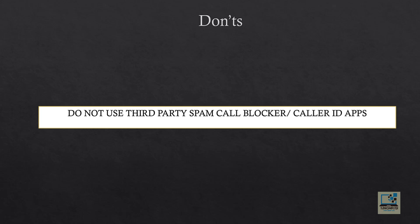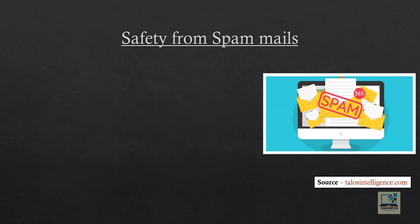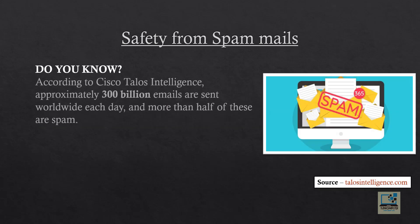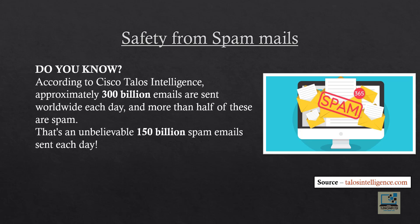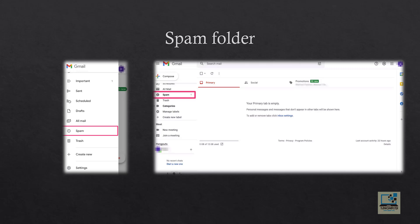Safety from spam mails: according to Cisco Talos Intelligence, approximately 300 billion emails are sent worldwide each day, and more than half of these are spam — that's an unbelievable 150 billion spam emails sent each day. This is how the spam folder looks in Gmail: the left picture shows the spam folder in the mobile Gmail app, and the right one shows it in the web version.